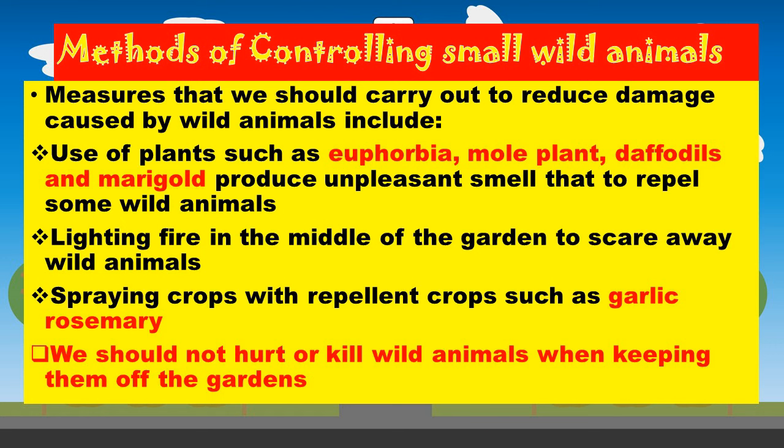Learners, you can also use lighting fire in the middle of the garden to scare away the wild animals. Spraying crops with repellent crops such as garlic and rosemary is also effective.